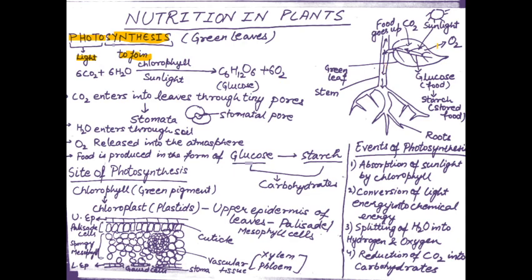What happens in a plant basically is that when sunlight falls on the leaves of the plant, the leaf has chloroplast in it. Due to the presence of chloroplast, they take up carbon dioxide and water in order to produce glucose as food, along with oxygen which is released into the atmosphere.